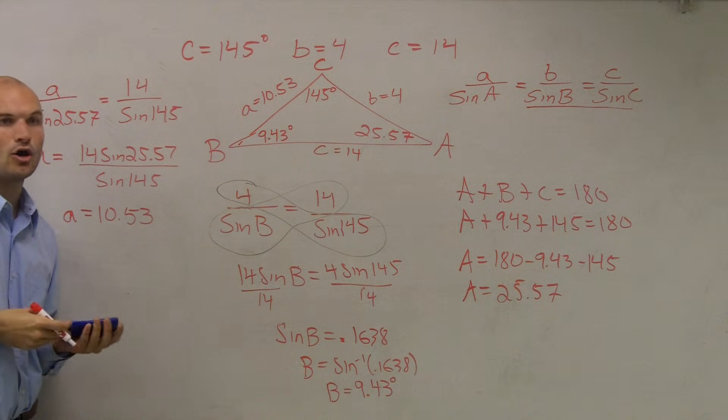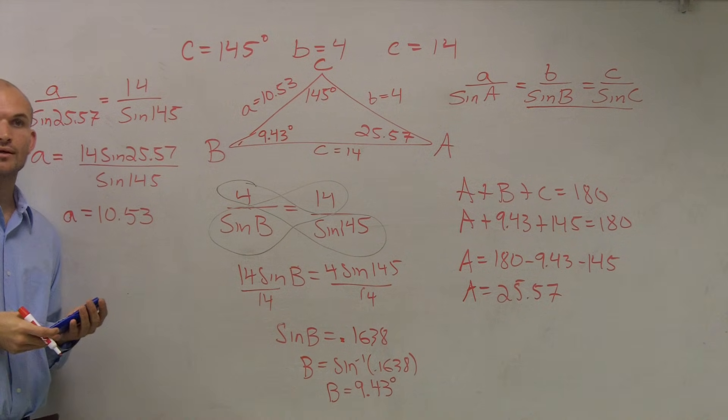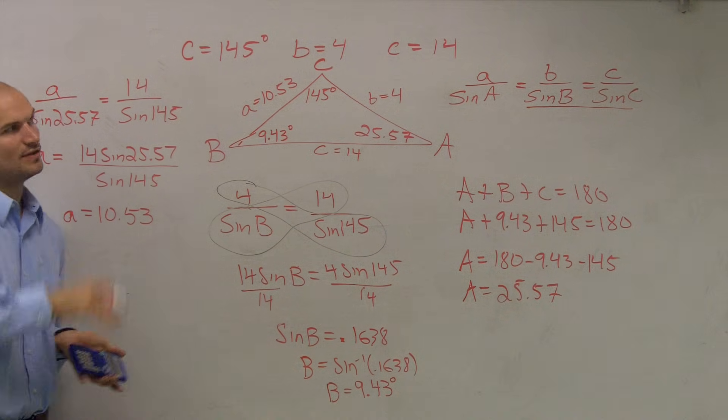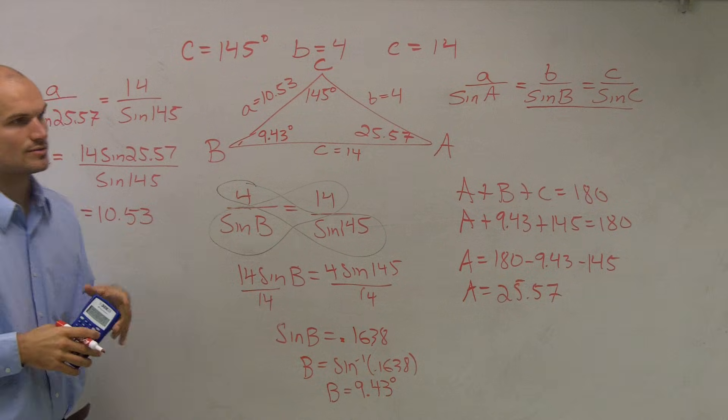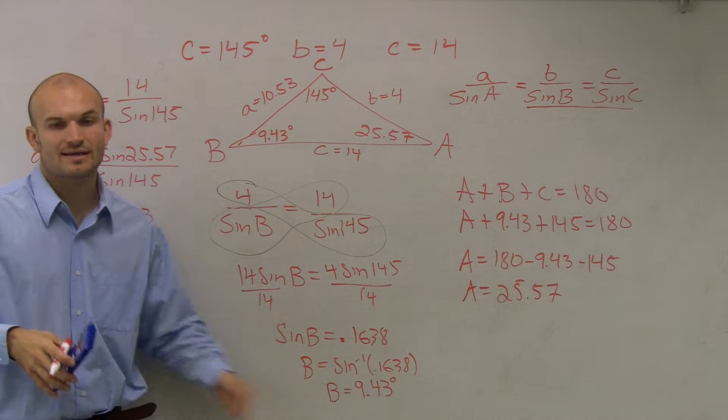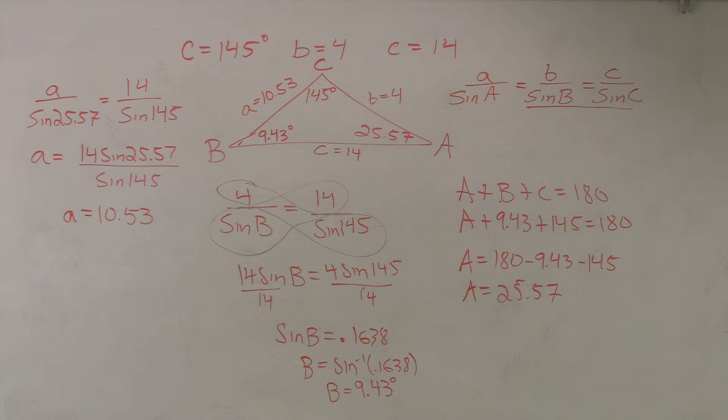And therefore now, I've found all the missing lengths and angles in my triangle. Any questions about this? Make sense? OK. Just fill it in, guys, and just use those ratios that you need. And the big thing is, remember to find that angle. All right, Tam, what was your question?